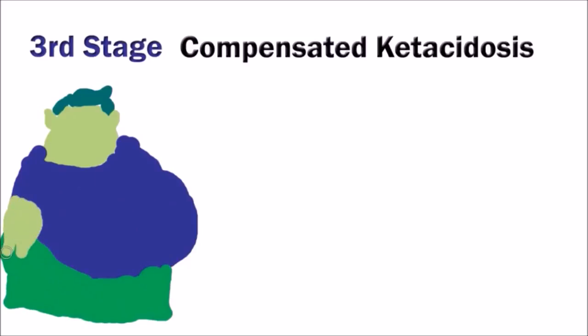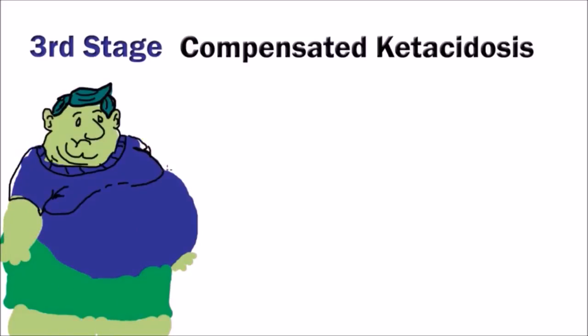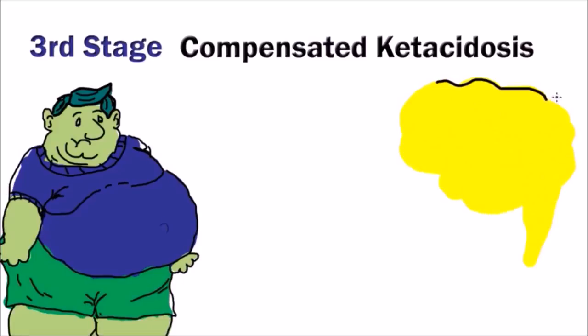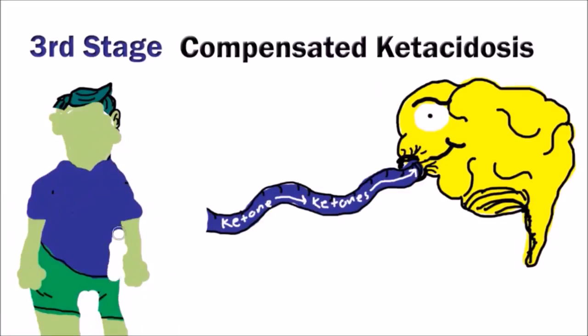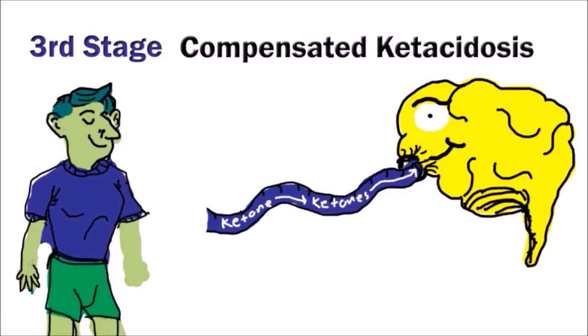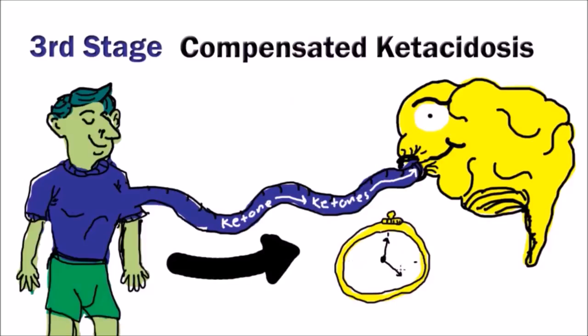The third stage is called compensated ketoacidosis, which is a complete shift of the body breaking down fat tissue. The brain no longer uses glucose at all, only uses ketones, which are broken down from fat storage. This process begins around seven days of water fasting and continues until the person stops the fast.